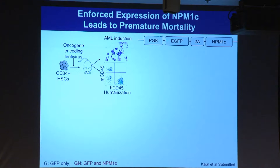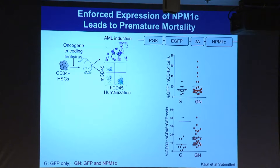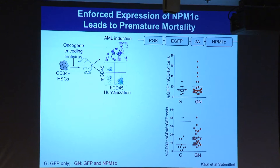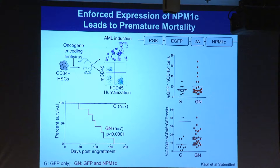What we did was use a lentivirus to express either GFP alone or GFP plus the mutant version of NPM1, transduce into stem cells, and make humanized mice. Looking at the percentage of GFP-positive human cells, there is no difference in peripheral blood. However, the myeloid cell percentage is higher. Most importantly, 100% of mice transduced with lentivirus expressing GFP and NPM1 die because they all develop AML.